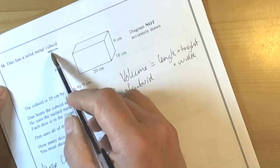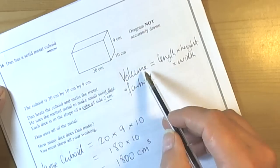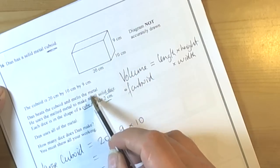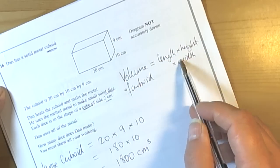So this question involves a cuboid, and cuboid requires you to know formulas for volume, particularly as this question is talking about melting the big one down to make smaller ones. So the volume of a cuboid is the length times the height times the width.